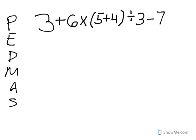So one thing we should always do is do our checklist. So we're going to put P-E-M-D-A-S. And that helps us to remember the order to do these things in. So if we look at our problem, 3 plus 6 times 9 divided by 3 minus 7. The first thing we're going to do is we're going to solve the problem in parentheses. So 5 plus 4 is in parentheses. And we're going to add those together. And that's going to be 9.